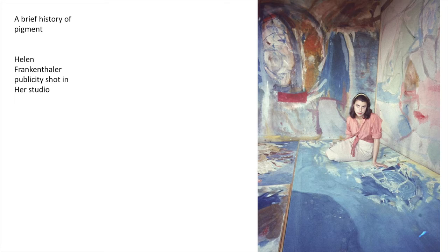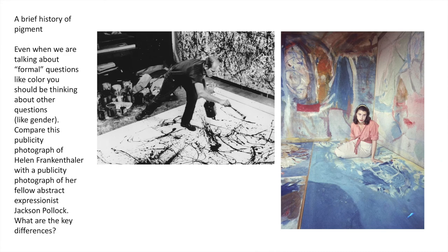Here's Helen Frankenthaler in a publicity shoot in her studio. Even when we're dealing with color, I want you to think about the social meanings associated with various things. Compare this publicity shot of Helen Frankenthaler — American abstract expressionist, mid-20th century — to a publicity shot of Jackson Pollock working in his studio. They're both part of the same art movement. Key differences: Frankenthaler is depicted with a soft lens, in color, and she is not painting, and probably not wearing the clothes she wore to paint. Pollock's image is black and white, showing him in action. So Pollock is presented as active and Frankenthaler as passive, even though her process probably had many similarities to his.